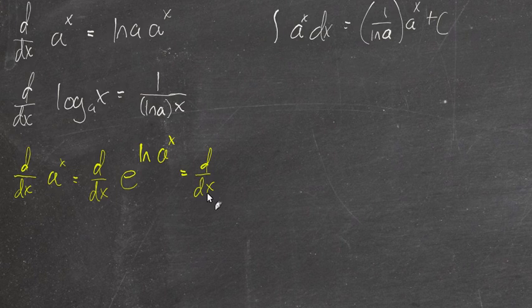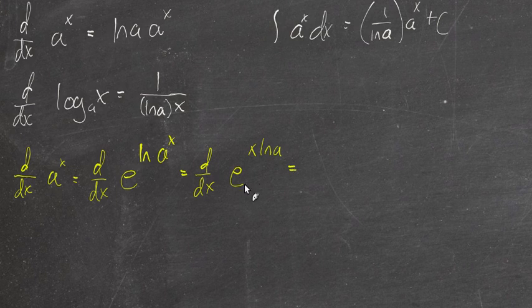So now we'll use the properties of logarithms to rewrite this. We're going to take the derivative of e to the... Now we're going to bring this exponent down in front. That's x times the natural log of a. And now we can take the derivative.